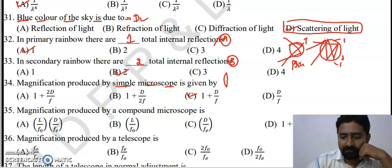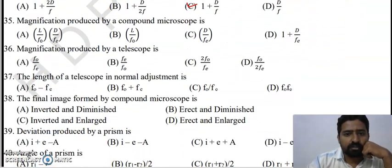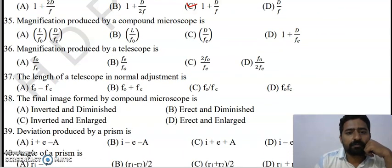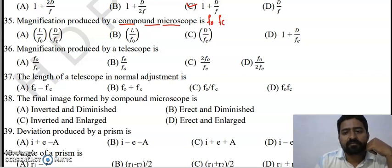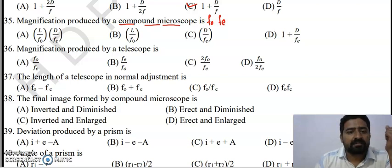Question 35: Magnification produced by a compound microscope. There are two lenses — the objective lens with focal length fo and the eyepiece with focal length fe. The formula is L divided by fo, plus D divided by fe. Option A is the right answer.